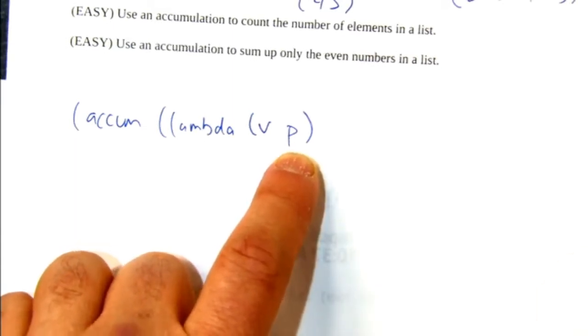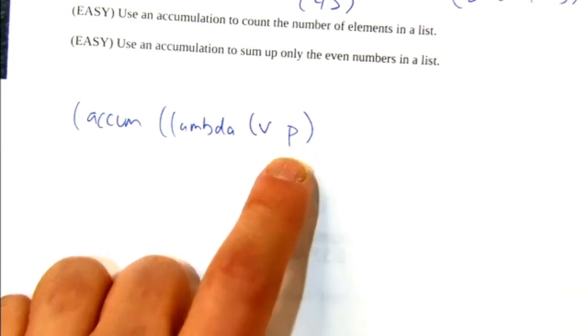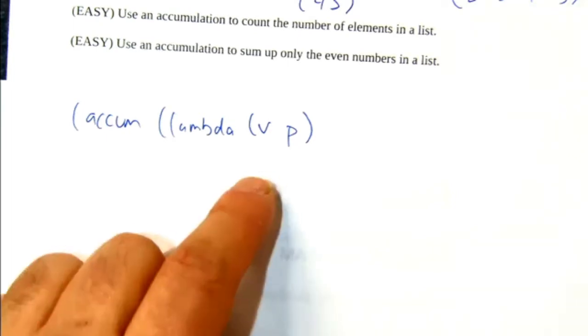And when we get our way to the end, then this lambda will return the answer. When we're all the way at the front, we're doing the last application. It's combining the first number in the list and the sum so far, and it combines it and spits out the answer.